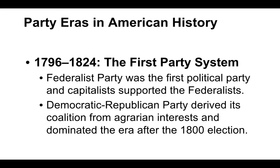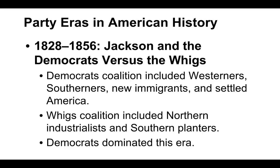Then we see the era of Jackson — Jackson and the Democrats versus the Whigs. Jackson is the first Democrat. His coalition included Westerners, Southerners, new immigrants, and people that lived in settled America. The Whigs' coalition included people from the northern industry and southern planters — people that hated Jackson. The Whigs were a party that sprung up in complete opposition to Andrew Jackson; they needed a counterbalance once the Federalists disappeared. The Democrats would still dominate this era, from 1828 to 1856.